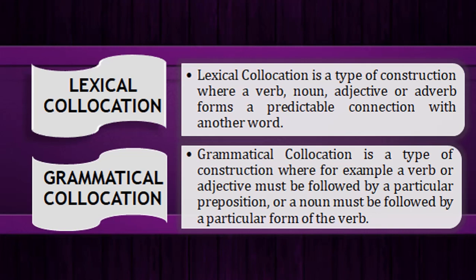Another example of lexical collocation: 'lions roar' — we do not say 'lions shout.' 'Lions roar' is the correct collocation. So in lexical collocation we build a predictable connection between words. Grammatical collocation, on the other hand, is a type of construction where a verb or adjective must be followed by a particular preposition, or a noun must be followed by a particular verb form. For example, 'depend' always takes 'on' — we say 'he depends on his father,' not 'he depends of his father.' Similarly, 'listen' always takes 'to,' and 'afraid' always takes 'of' — 'I am afraid of snakes,' not 'I am afraid at snakes.'